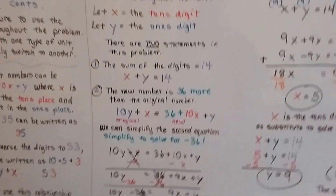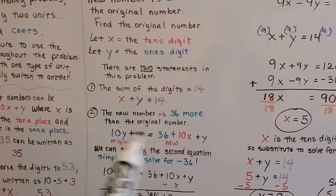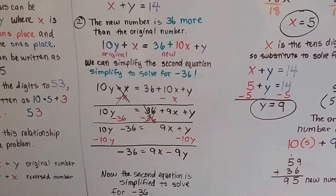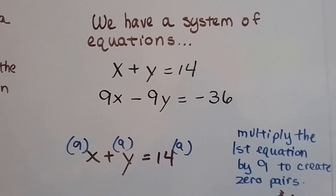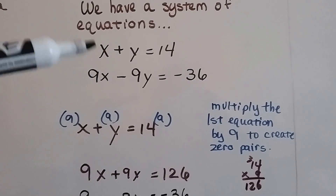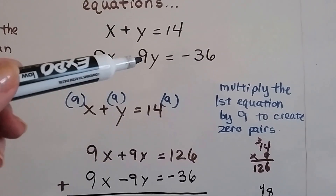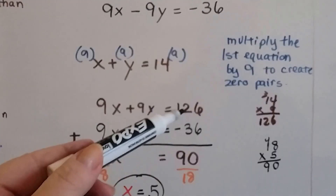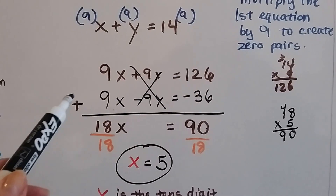Remember, this is a rule: when the new number is more than the original number, you want to solve this equation for negative whatever the more was. Since this was 36 more, we're trying to solve the second equation for negative 36. So now we have our system of equations: x plus y equals 14, and 9x minus 9y equals negative 36. We can multiply all the terms in the first equation by 9. Then we'll have a positive 9y and a negative 9y, and we get 9x plus 9y equals 126. The plus 9y and minus 9y can be eliminated, creating a zero pair, and we can solve for x.